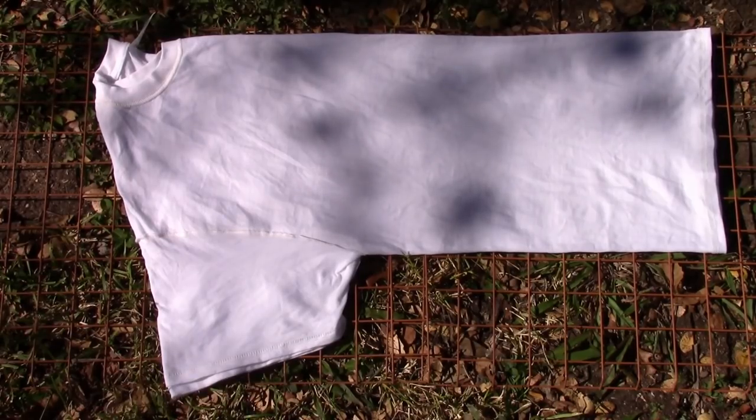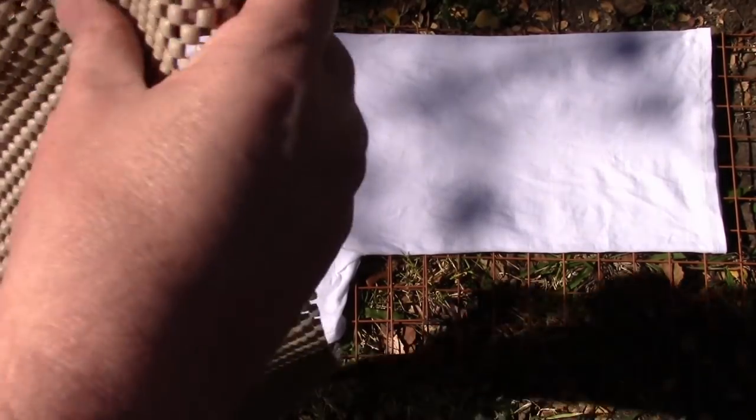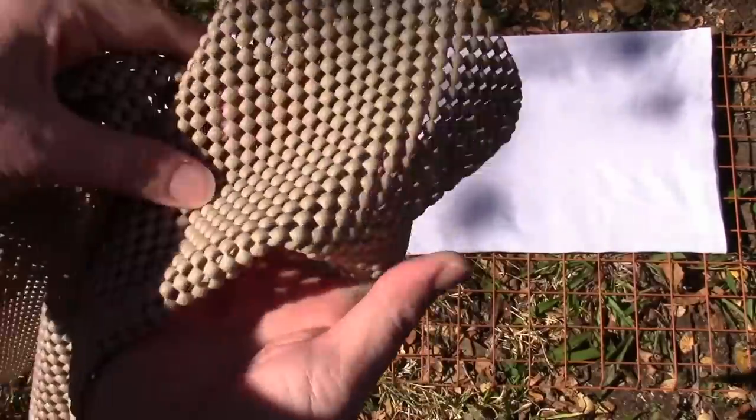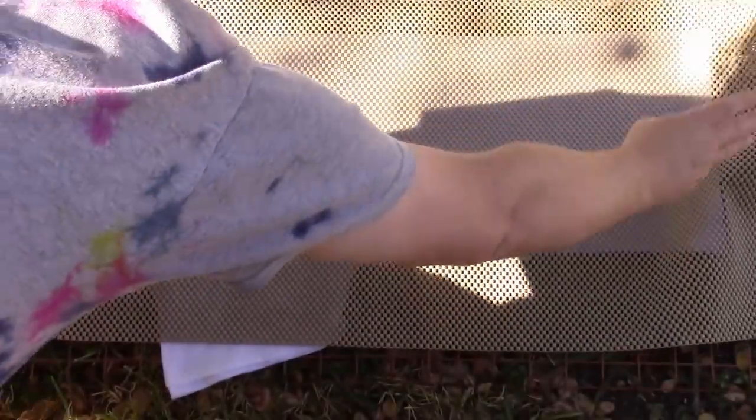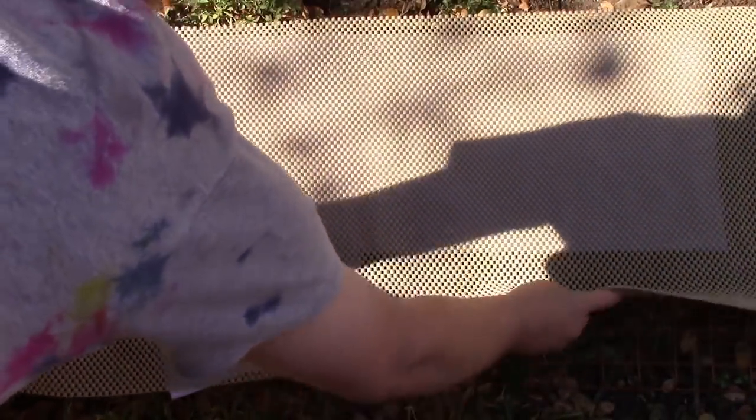So I've laid out the shirt as flat as I can onto a rack sitting on the ground. And I'm going to add this anti-slip material over the top, and then I'm going to hold that down with some bricks.